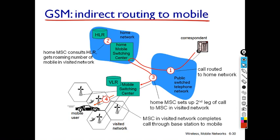This is called indirect routing of a call to a mobile in GSM. To summarize: the correspondent makes a call, which is routed to the home network. The home MSC verifies the call using the HLR, which contains information about whether the user is in the home or foreign network. If in the foreign network, the user's roaming number or care-of address is retrieved and passed to the home MSC, which then routes the call to the foreign network.